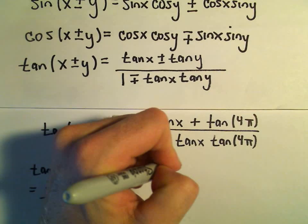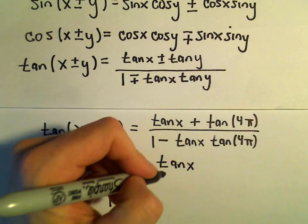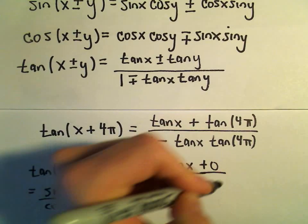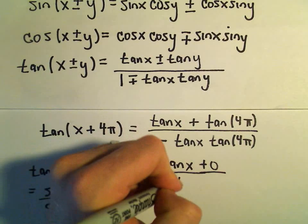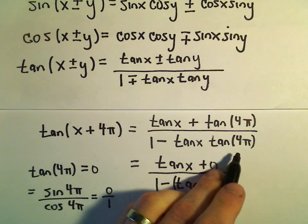So really, we're just left with tangent x plus 0 in the numerator. So I'm just going to leave that out. Well, let's stick it in there one time. Plus 0. Then we'll have 1 minus tangent x times tangent of 4π,